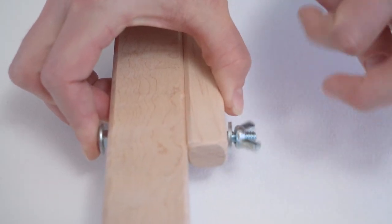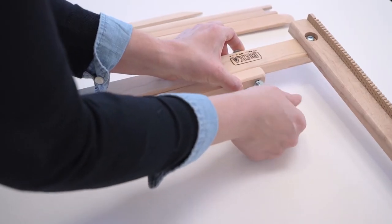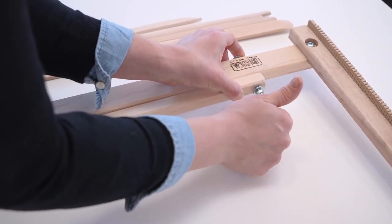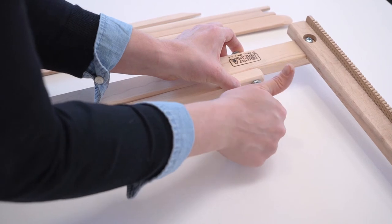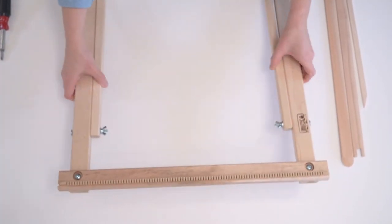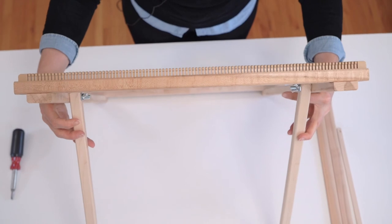So it's a basic assembly with simply screwing in four screws and then the two bolts and wing nuts on the sides of the kickstand. Once that's all together and set up, you're ready to start weaving.